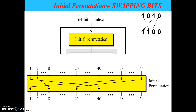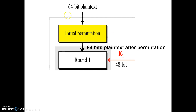For performing initial permutation, you start with 64-bit plain text. For example, if you have 4 bits — 1010 — and you are told to do permutation, you will change the position of these bits. So the output might be 1100, where the bit positions have been swapped. The same thing is performed here for initial permutation: 64 bits of plain text arrive, and after performing initial permutation, the positions of the bits change, as shown in the yellow block. This will be the input for round number 1, along with a 48-bit key.